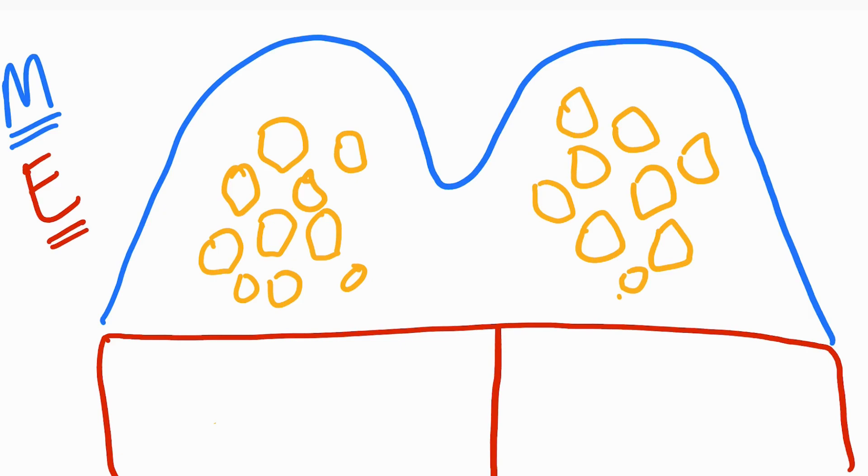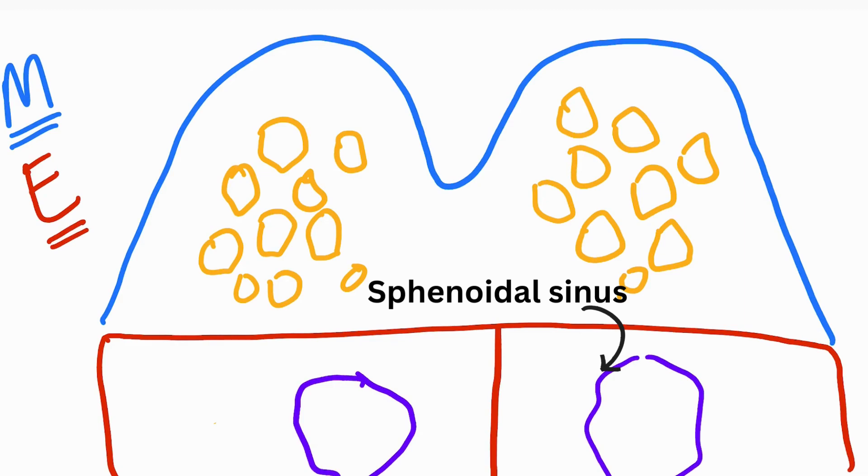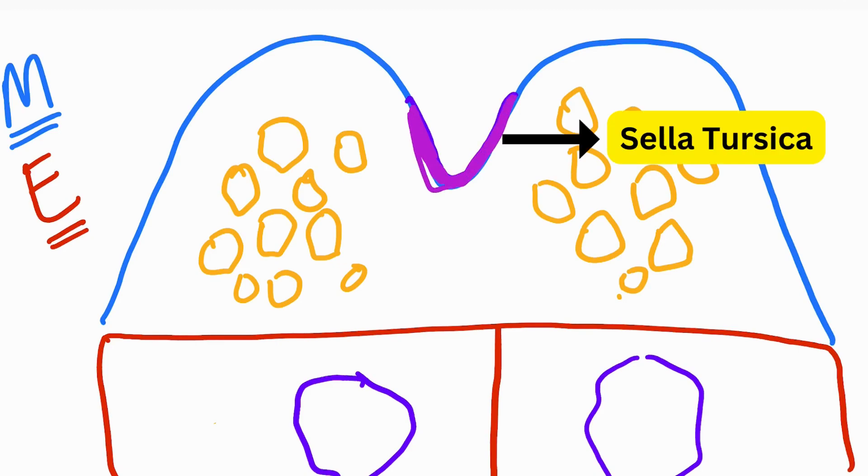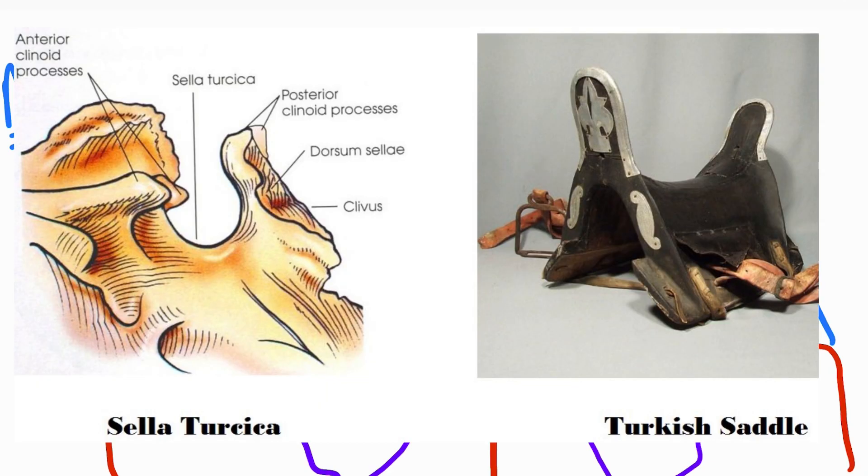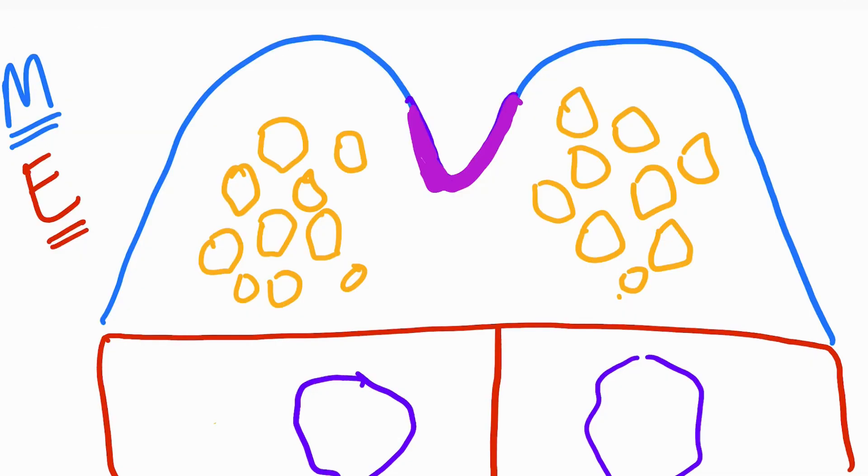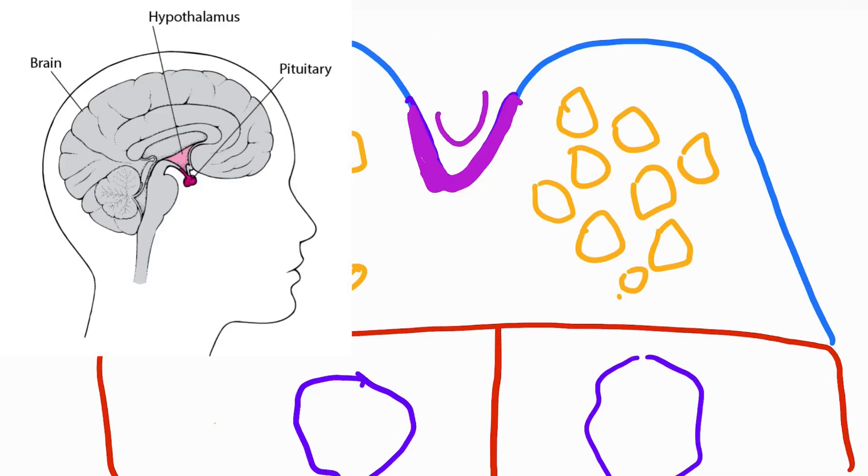So you see this right here. Since we said that this is in the sphenoid bone, we can draw the sphenoid sinus right here. These are the two sphenoid sinuses. So I did mention that cavernous sinus is on either side of the sella turcica. So this pink right here is the sella turcica and what does sella turcica mean? Yes, Turkish saddle and what does it hold? Yes, it holds the pituitary gland.